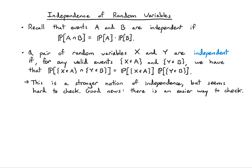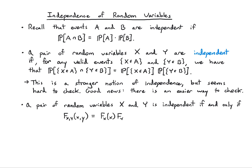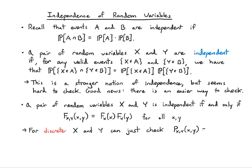Before, we were talking about two events A and B and whether they're independent. For random variables to be independent, any events involving those random variables have to be independent — not just some particular A and B, but all choices of A and B. A pair of random variables X and Y are independent if and only if the joint CDF factors. For all X and Y, I can write the joint CDF as the product of the marginal CDFs. For discrete X and Y, this corresponds to checking if the joint PMF factors: P(X,Y) = P(X) × P(Y).